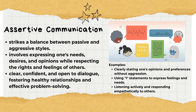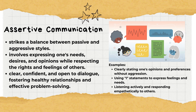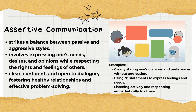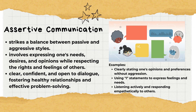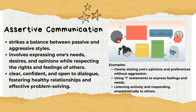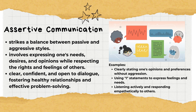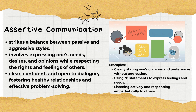Now, let's explore the middle ground: assertive communication. This style strikes a balance between passive and aggressive approaches, involving the expression of one's needs, desires, and opinions while respecting the rights and feelings of others. Assertive communicators are clear, confident, and open to dialogue, fostering healthy relationships and effective problem-solving. For example, clearly stating one's opinions and preferences without aggression, using 'I' statements to express feelings and needs, and actively listening and responding empathetically to others.